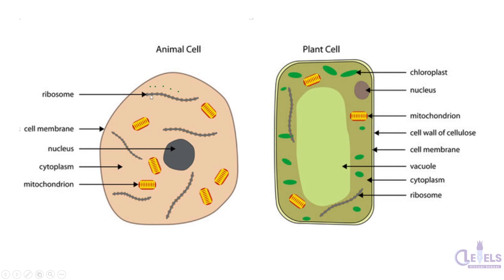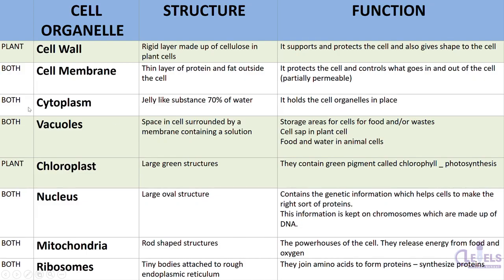Here is another structure — you can see these tiny dots. These tiny dots are ribosomes. You will study what their function is as well. These ribosomes might either be suspended in the cytoplasm or they could be near the nucleus and attached to another cell organelle that we will study later on.